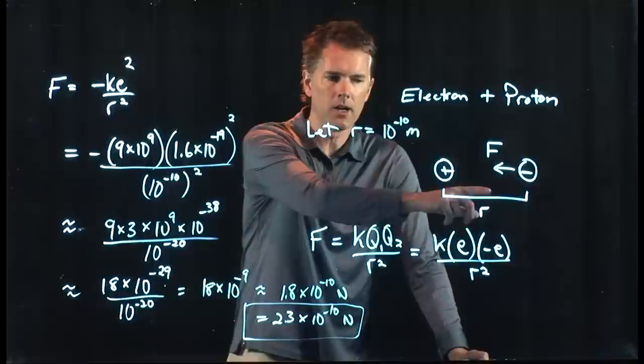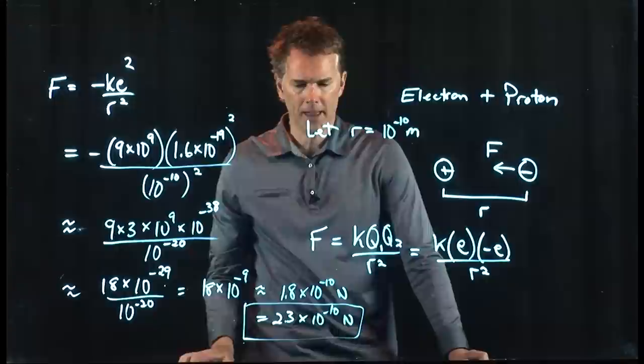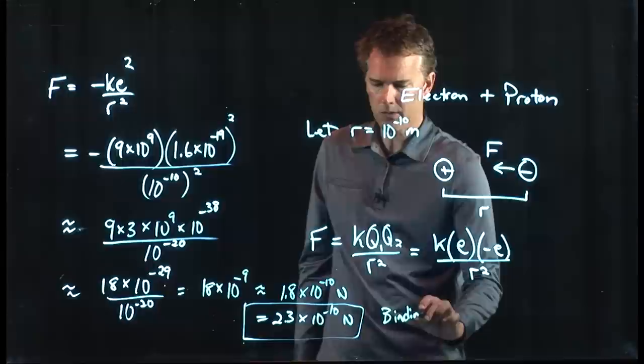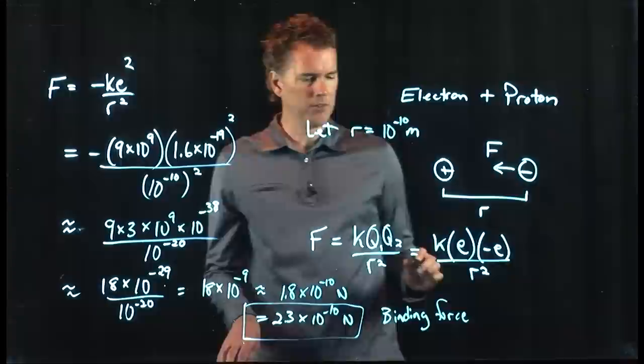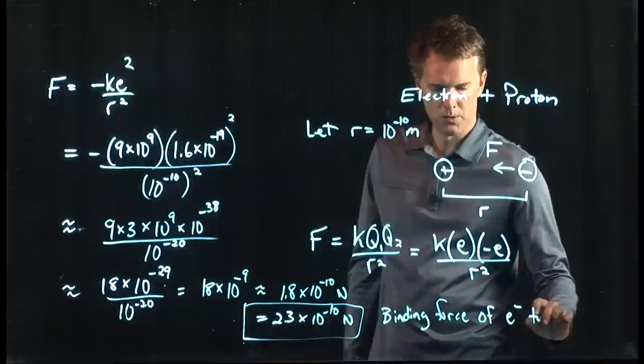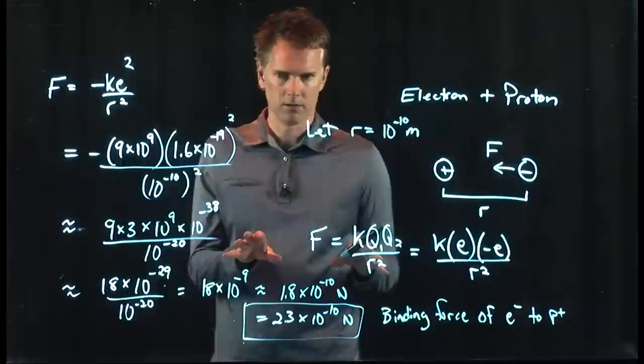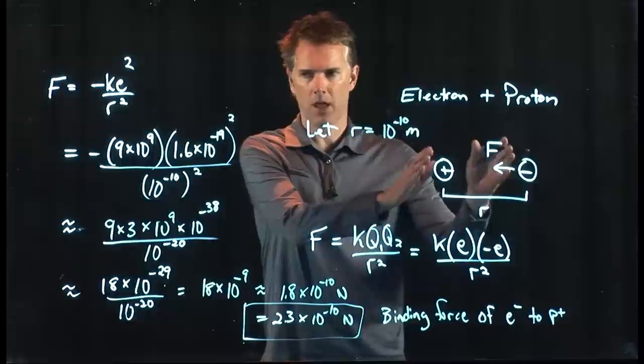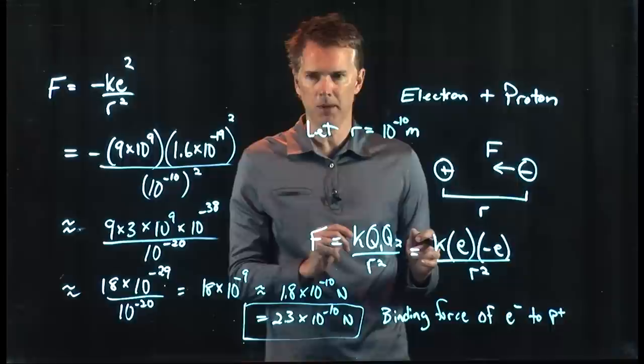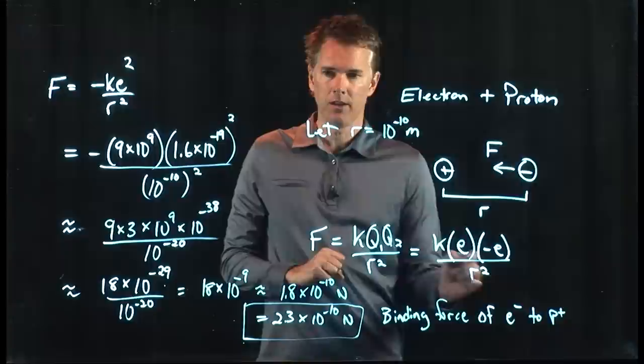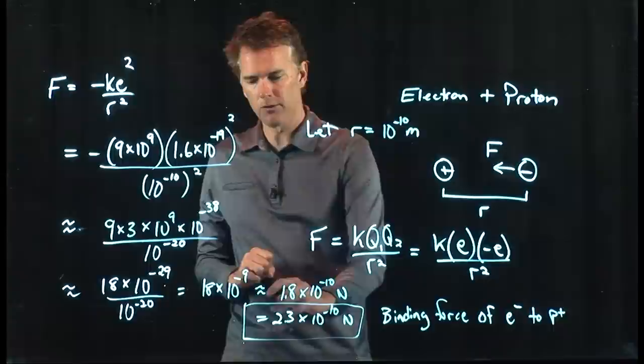2.3 times 10 to the minus 10 newtons is the force in SI units for the electron and proton at that separation. That sounds like a small number, but electrons and protons are pretty small. This is the binding force of an electron to a proton in a hydrogen atom — roughly the right distance of about 1 angstrom, 10 to the minus 10 meters. So the force holding the electron in its orbit is 2.3 times 10 to the minus 10 newtons.